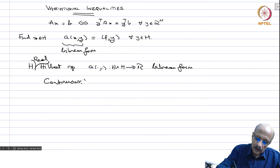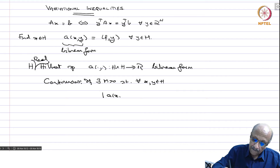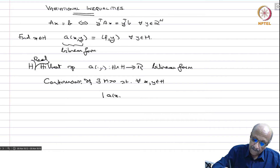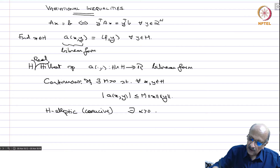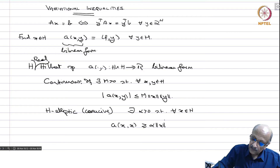The bilinear form is continuous if there exists an M positive such that for every x, y in H we have |A(x,y)| less than or equal to M times norm(x) times norm(y). Then it is called H-elliptic — another word is coercive. This terminology we have seen before. It is coercive if there exists alpha positive such that for every x in H, A(x,x) is greater than or equal to alpha times norm(x) squared. Then it is called H-elliptic.